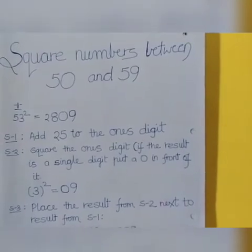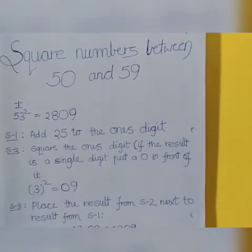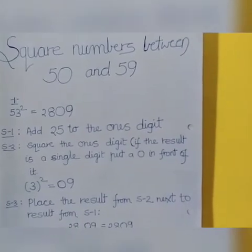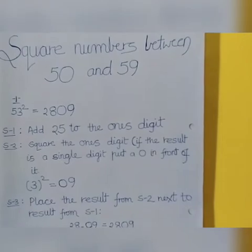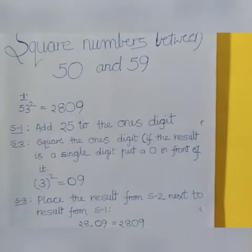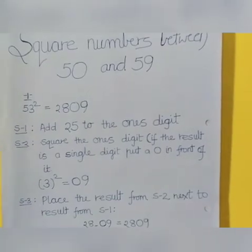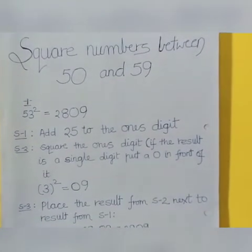So, these are the three steps that I have written for you. Step 1 is add 25 to the ones digit. Step 2 is square the ones digit. Step 3 is place the result from step 2 next to the result from step 1. Simple thing.